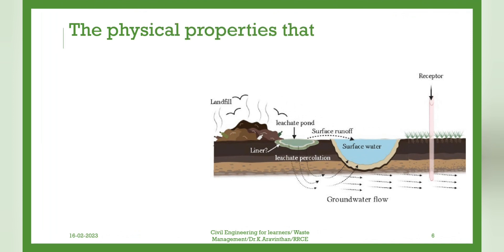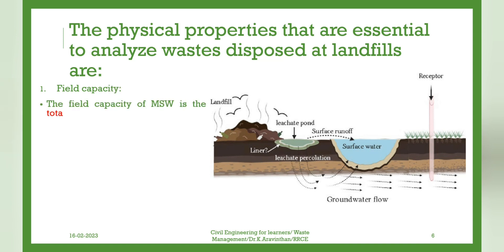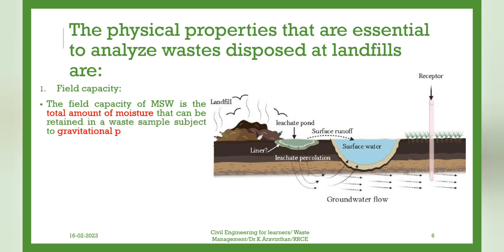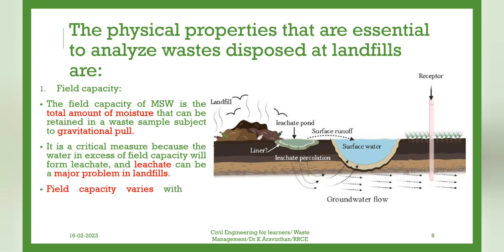The physical properties that are essential to analyze wastes disposed at landfills are: Field Capacity. The field capacity of MSW is the total amount of moisture that can be retained in a waste sample subject to gravitational pull. It is a critical measure because the water in excess of field capacity will form leachate, and leachate can be a major problem in landfills. Field capacity varies with the degree of applied pressure and the state of decomposition of the wastes.